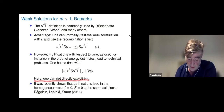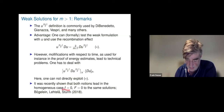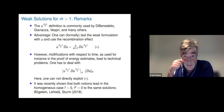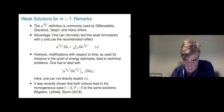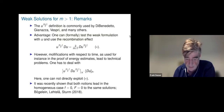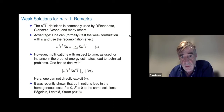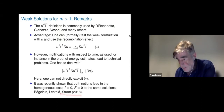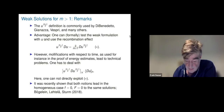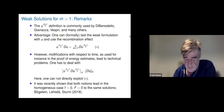In the homogeneous case with no coefficients, Bögelein-Duzaar-Stromqvist showed that the u^((m+1)/2) definition and the u^m definition give the same solutions — they coincide. But this proof is a speciality of the model case, and does not extend to x,t-dependent coefficients.